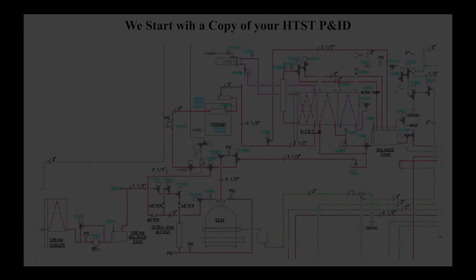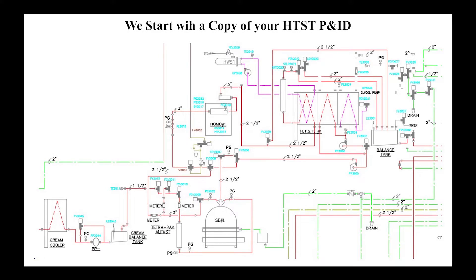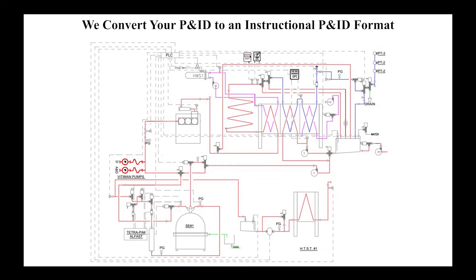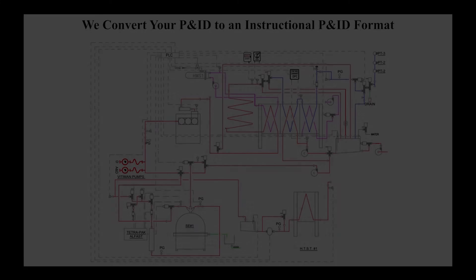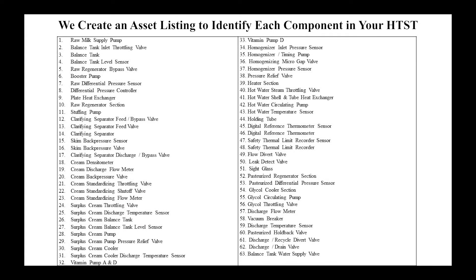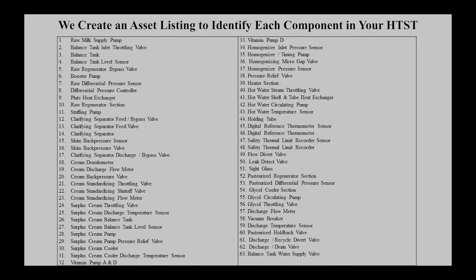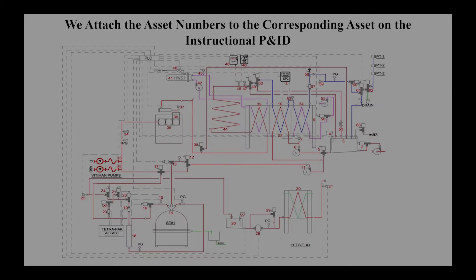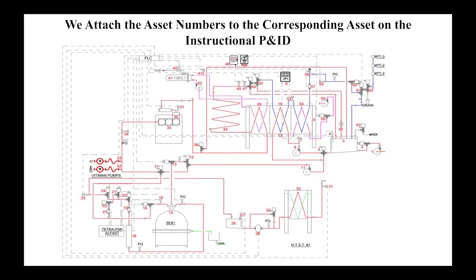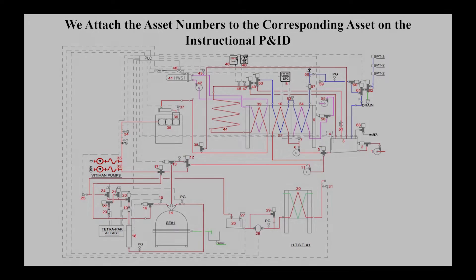We start with a copy of your HTST P&ID. We convert your P&ID to an instructional P&ID format. We create an asset listing to identify each component in your HTST, and we attach the asset numbers to the corresponding asset on the instructional P&ID.